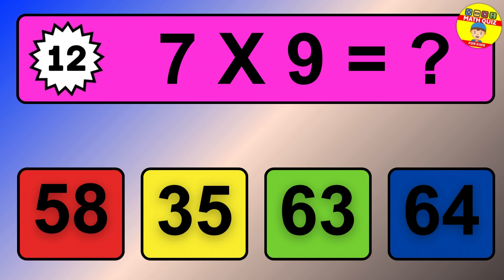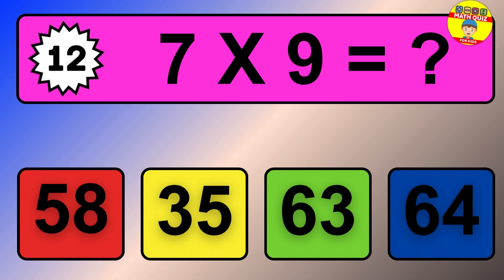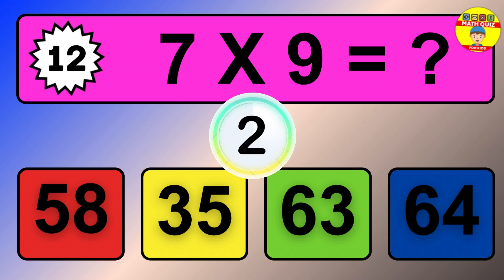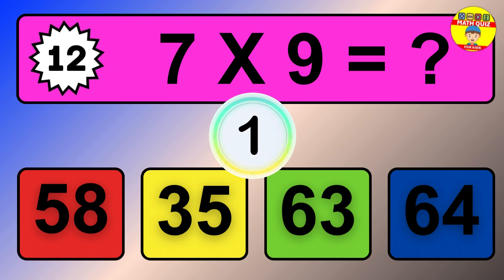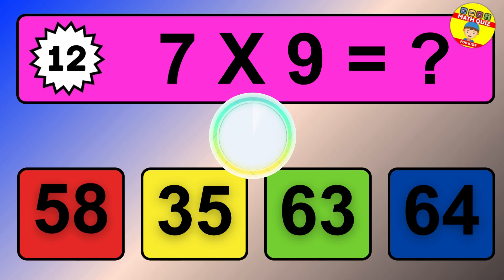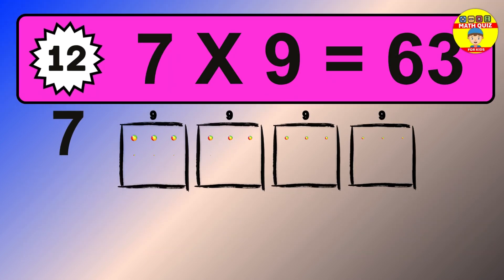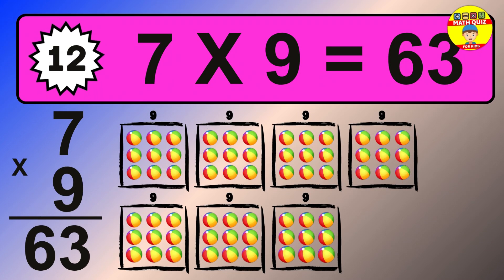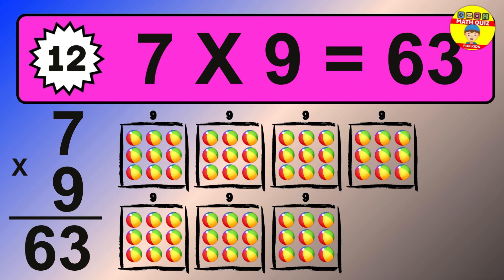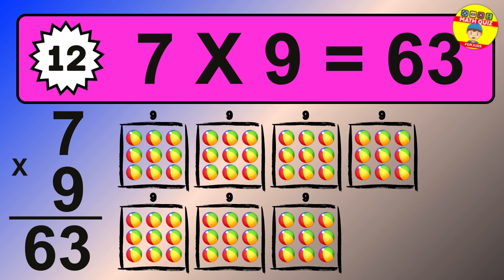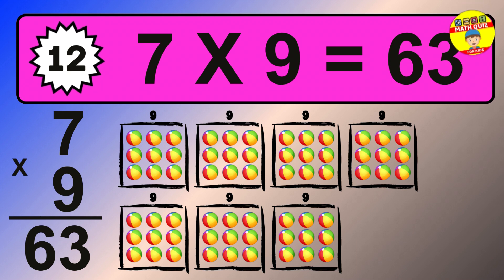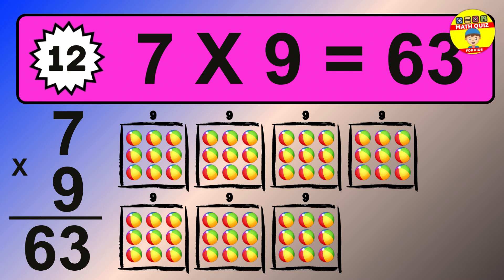Question 12. 7 times 9 equals what? The answer is 7 times 9 is 63. To calculate, we have 7 groups with 9 balls each one. So how many balls do we have? 63 balls.